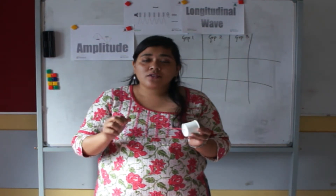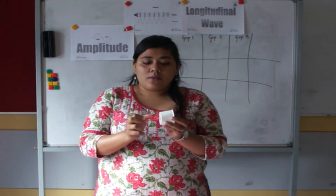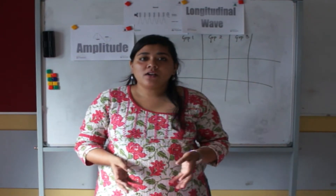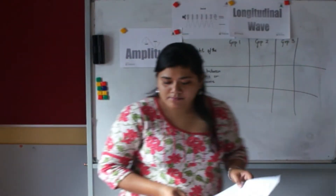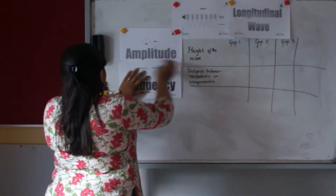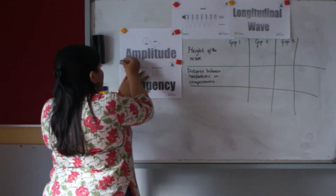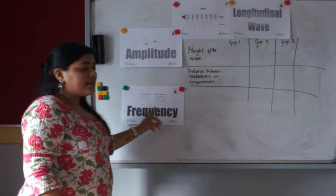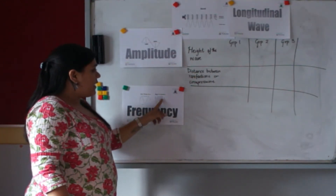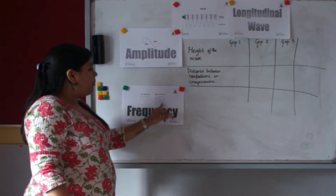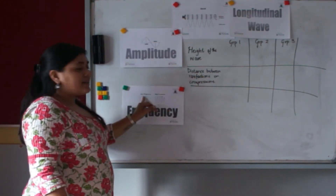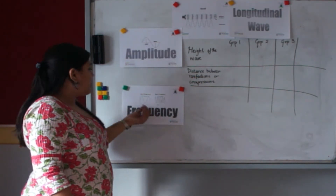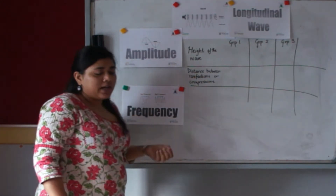The number of times an object vibrates in a second is what changes as you stretch the rubber band. The more you stretch it, the more it vibrates; when closer, it vibrates less. This characteristic of a wave is called frequency. Frequency is the number of waves made in one second. More waves means high frequency; fewer waves means low frequency. This shows how many oscillations happen in a given time frame.